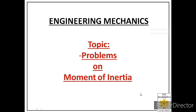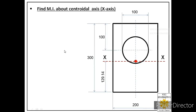Welcome students. Today we will solve the seventh problem on moment of inertia. We are given one composite area and we are asked to find the moment of inertia of this composite area about the centroidal axis. The X axis is passing through the centroid of this composite area at 129.14 mm from the base. We have to find IX.